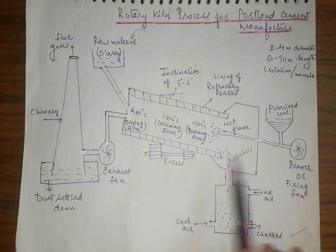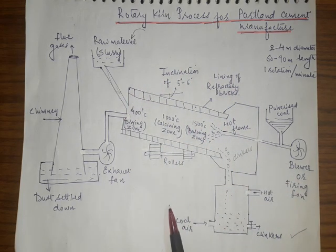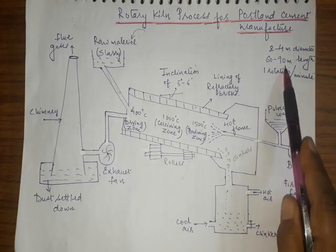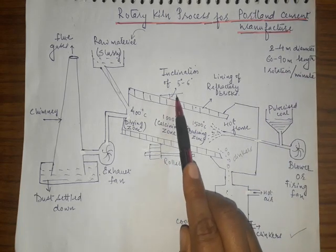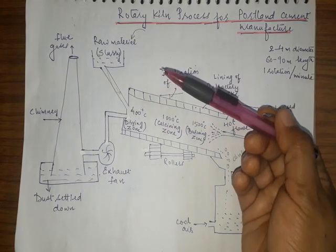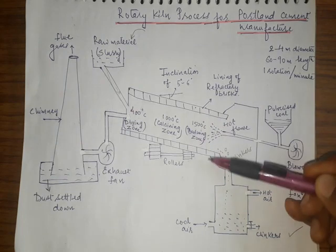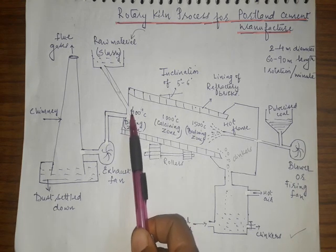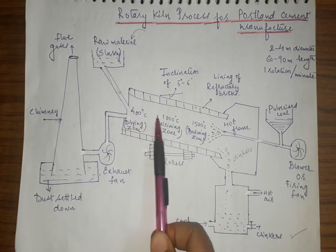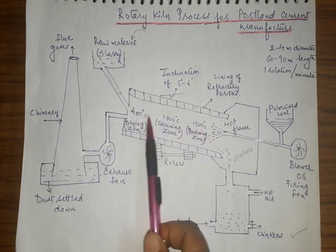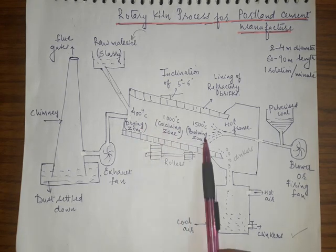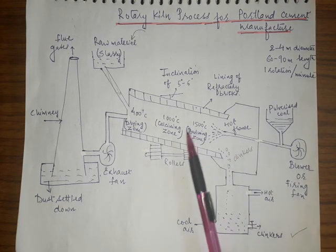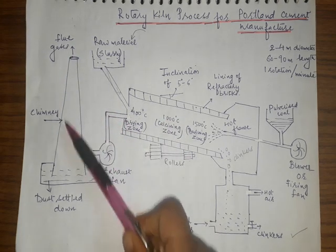The rotary kiln has dimensions of 2 to 4 meters in diameter and 60 to 90 meters in length. Since it is slightly tilted and undergoing rotation, the raw materials slowly travel from the lower-temperature side towards the higher-temperature side. In this whole process, drying, calcination, and burning occur, and clinkers are finally collected. The flue gases are released through the chimney.